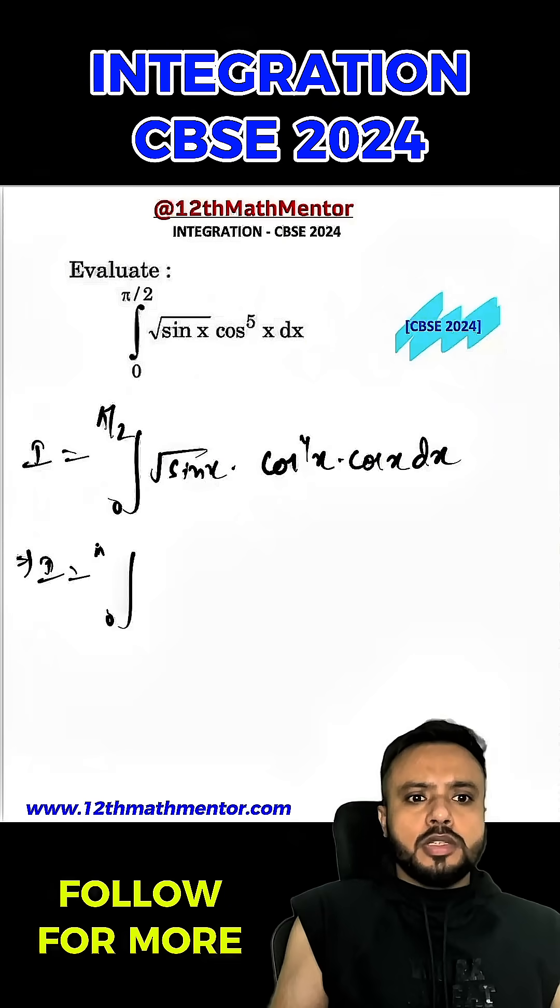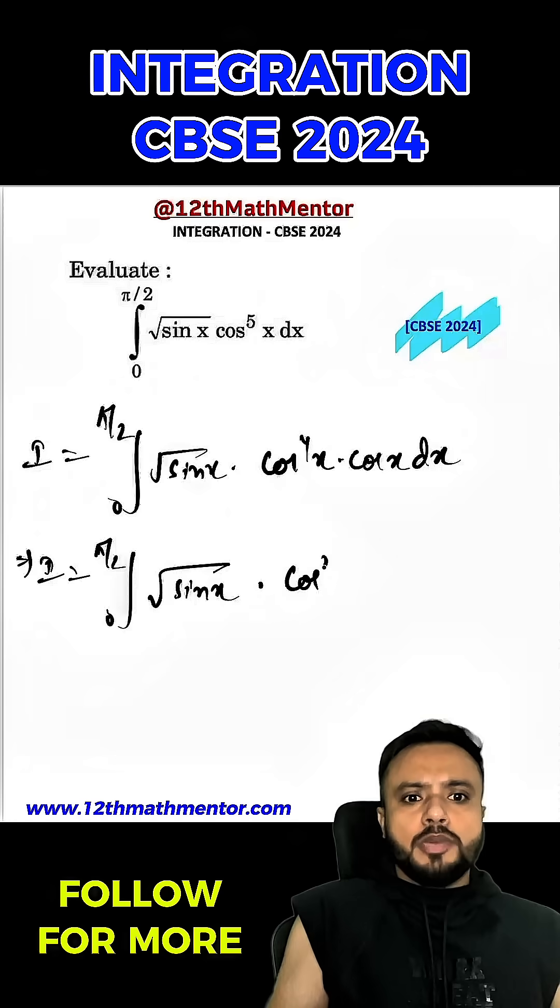Hence, I can write i as 0 to pi by 2 root of sin x. Now, cos raised to the power 4x can be written as cos square x square into cos x dx.